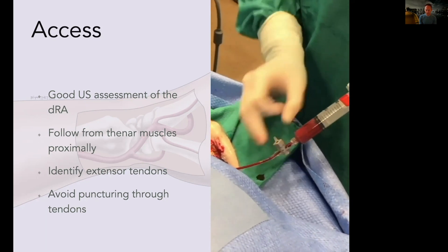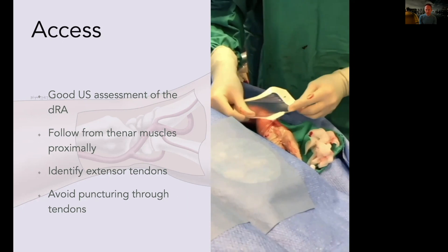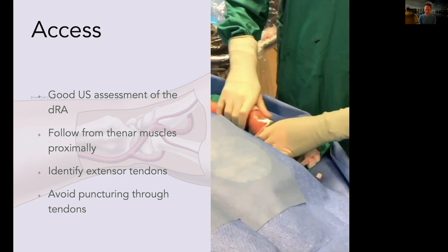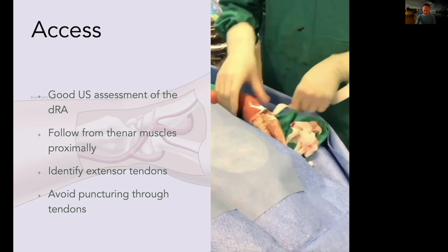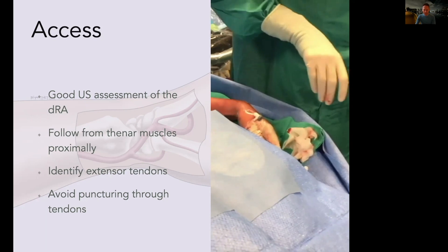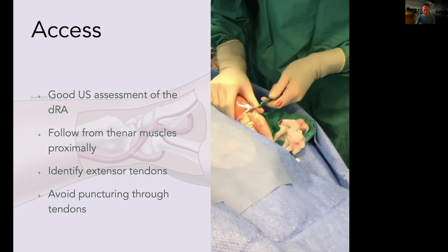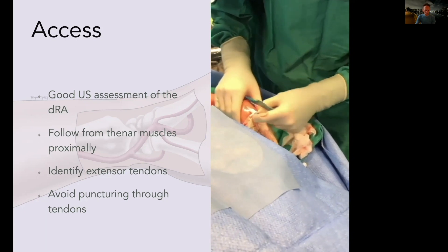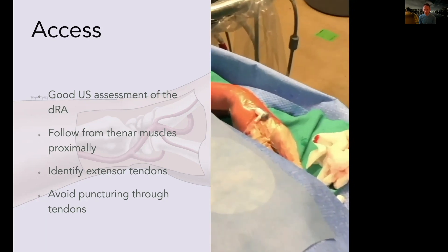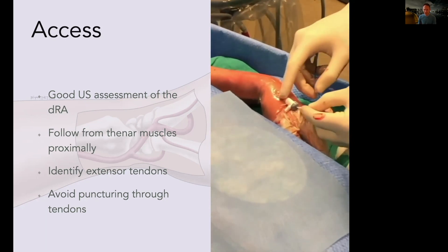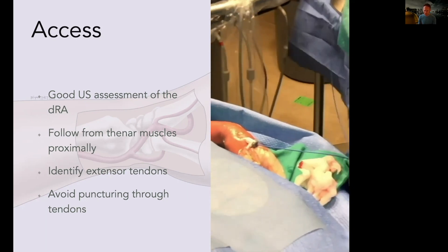Once I've got my sheath in, I cover it with a tegaderm to prevent it from slipping out. This is my radial cocktail — I dilute it with blood to decrease pain, inject over 30 seconds, then flush the sheath with saline. I put a tegaderm over the sheath because otherwise it will slip out — there's no subcutaneous tissue. I make a little nick in the tegaderm to allow the catheter through. Importantly, identify your extensor tendons and absolutely do not puncture through them — it can be devastating, causing pain, long-term sequelae, and tenosynovitis.